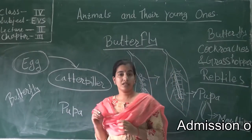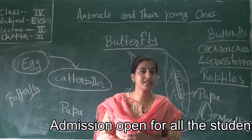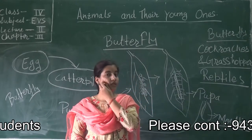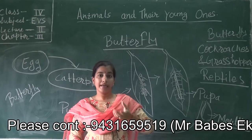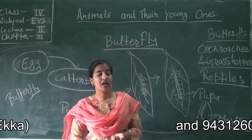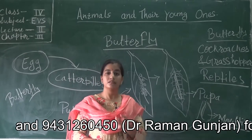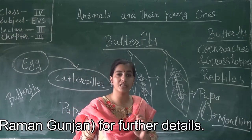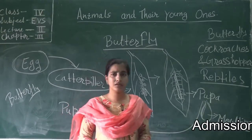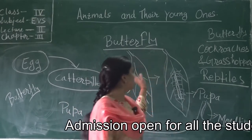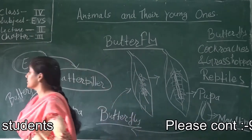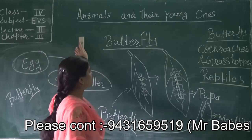Butterfly lays eggs on leaves. Where does frog lay eggs? Frog lays eggs in the water. The eggs of a frog look like jelly, and this jelly-like structure or jelly-like eggs are termed as spawn. You all have to learn these things very well. The next animal we will discuss is cockroach and grasshopper.